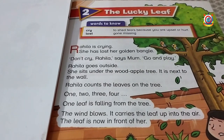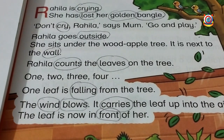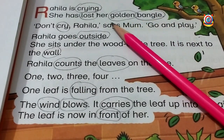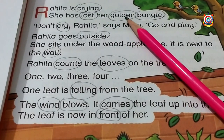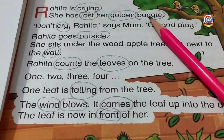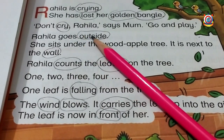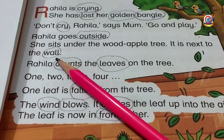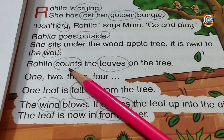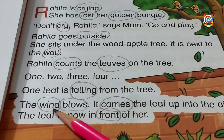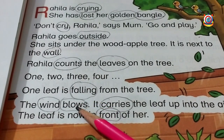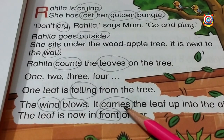Students, are you enjoying the story? Very good. Now I have circled the difficult words. Let's read with me: Crying, Lost, Golden, Bangle, Cry, Outside, Wall, Counts, Leaves, Falling, Wind, Blows, Carries, Front.